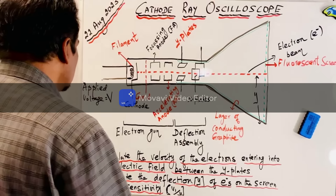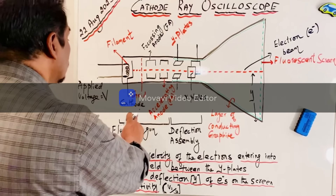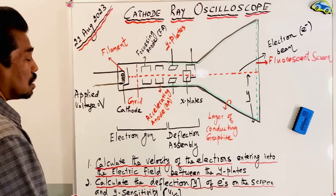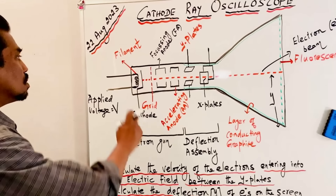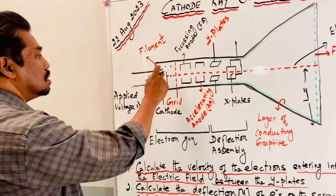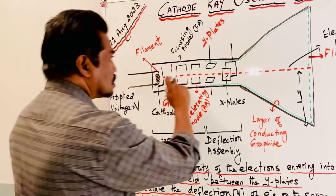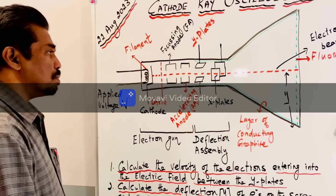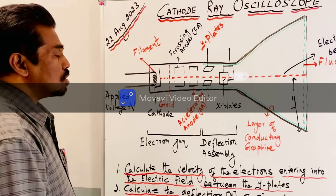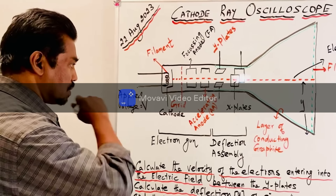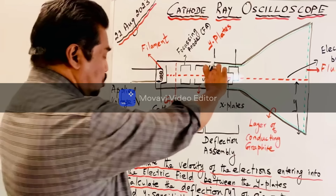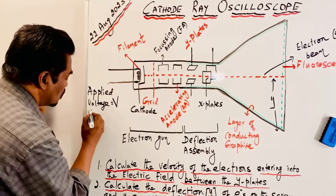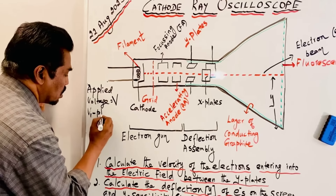Once the voltage is applied, the filament starts to emit electrons, and the electrons start to move from the grid to the screen, producing a bright spot on the screen. When you apply a plate voltage V1, there is another voltage available called the plate voltage.